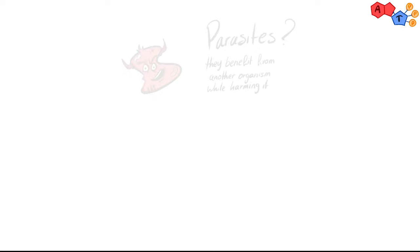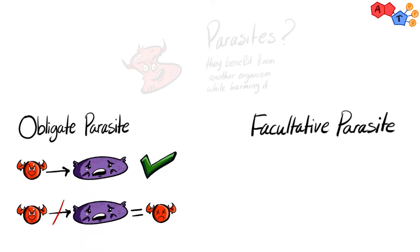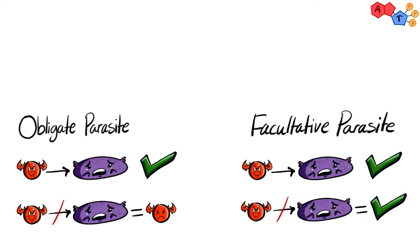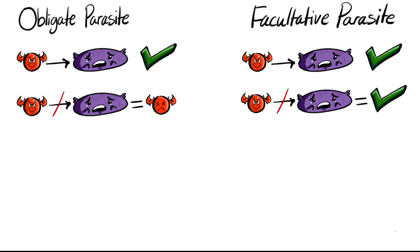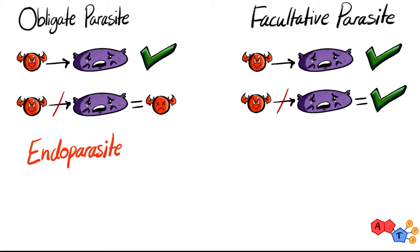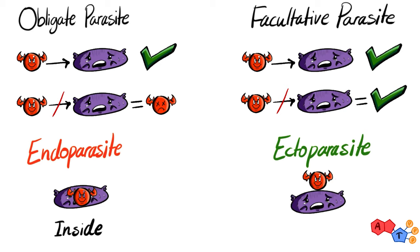There are different classifications for the parasitic association with the host. It can be either an obligate parasite, which can only survive in a host, or a facultative parasite, which can survive with or without the host. They can also be either an endoparasite, which lives inside the organism, or an ectoparasite, which lives on the body surface.